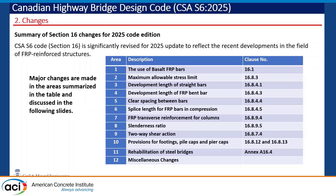is to allow the forces in the FRP under compression to be accounted for in the resistance of the section. But that limit was only a strain of 0.002, so if you multiply by 60 GPa, that is about 120 MPa.